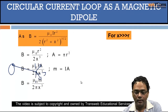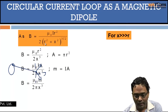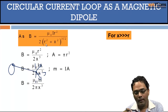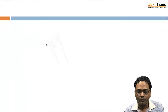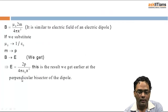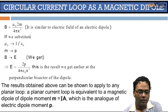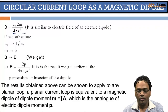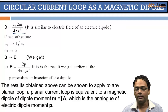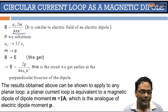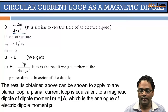For x greater than r — where r is the radius of the loop and x is the distance from the center — the expression simplifies significantly. The result gives us B expressed as mu-naught times 2m divided by 4-pi-x-cubed. There are two cases: equatorial and axial positions, and a net magnetic field value exists only for one of them.